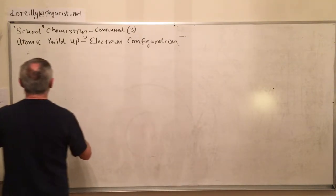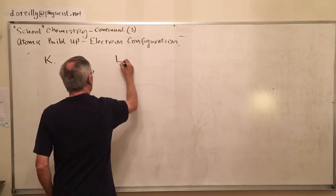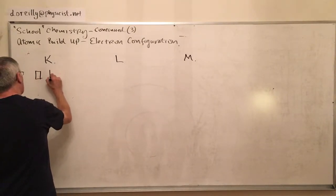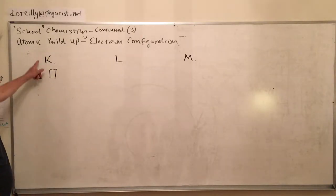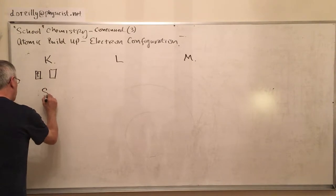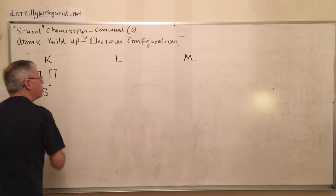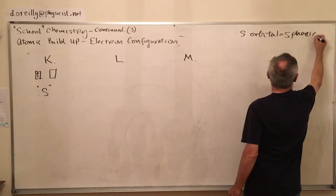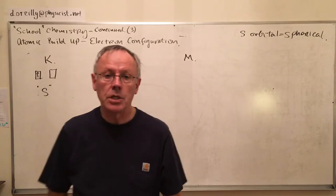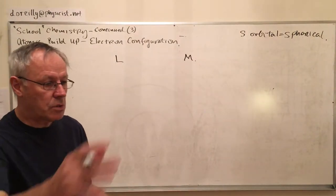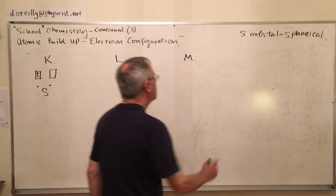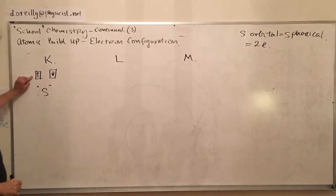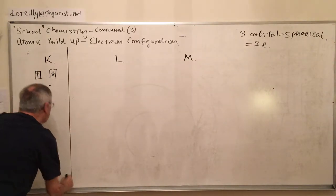This is electron configuration. We're only going to look at two types of configurations. If I start off in the K shell, we have what's called an S orbital. The S orbital is a spherical shape. It's actually a solution to Schrödinger's equation. S orbital is spherical and contains at most two electrons. We can put one electron spin up and another electron spin down, and that would be full.